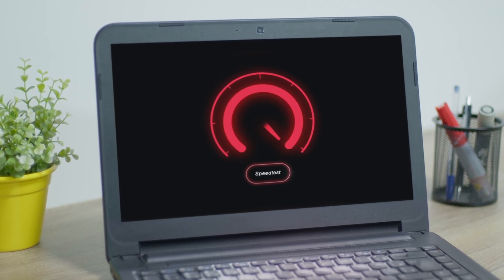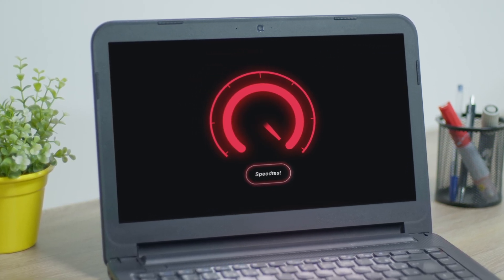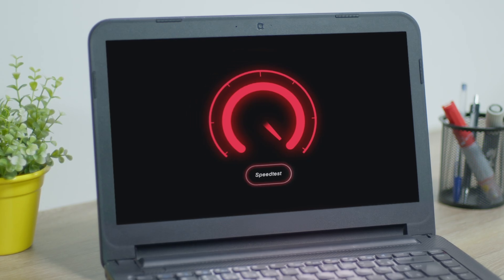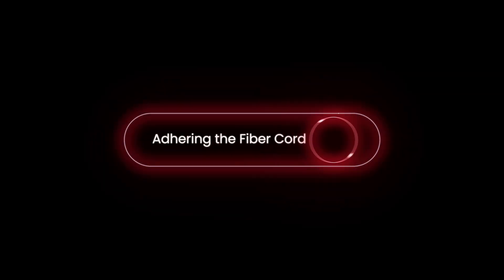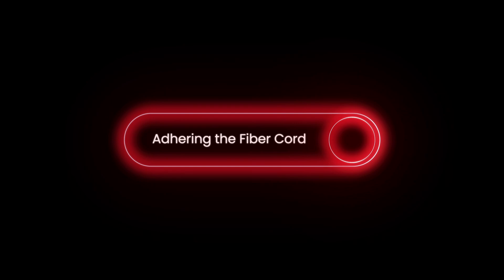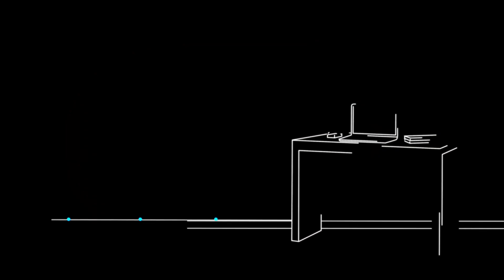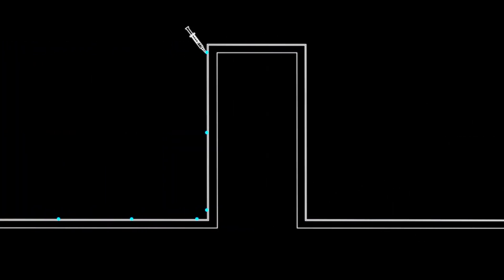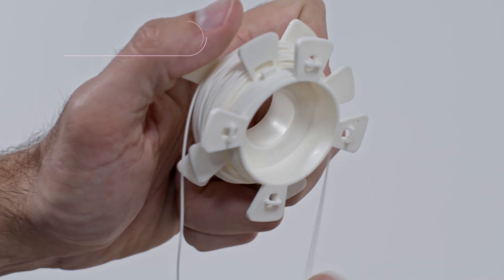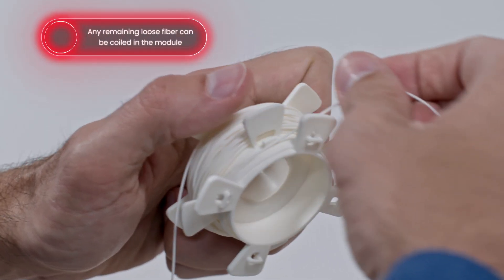For some computers, you may need to re-enable the ether port or restart your device. Now it's time to proceed with adhering the fiber cord to the wall. It's important to adhere from the far end and work backwards towards the module on the wall. Any remaining loose fiber can be coiled in the module.